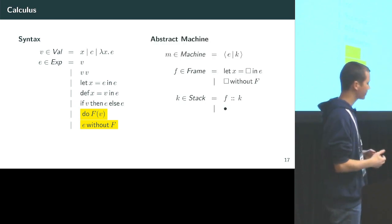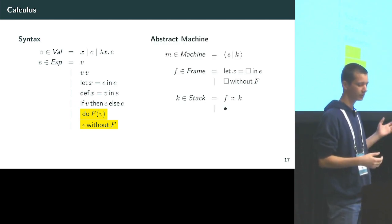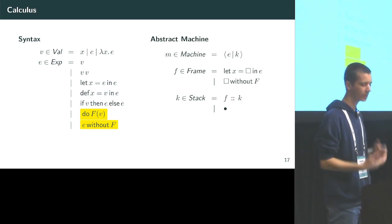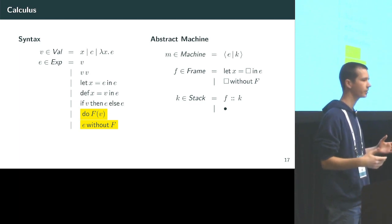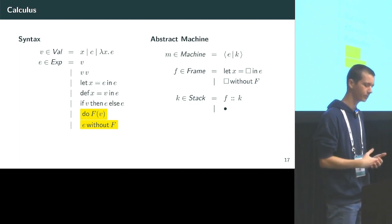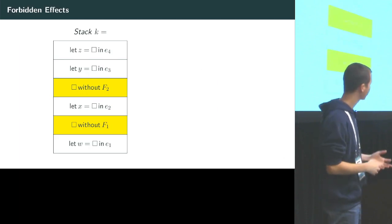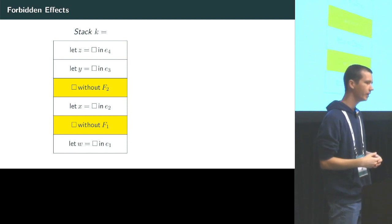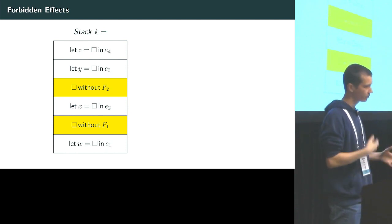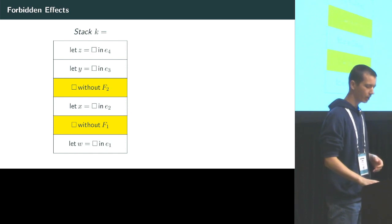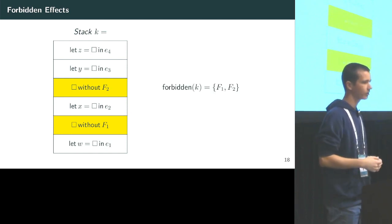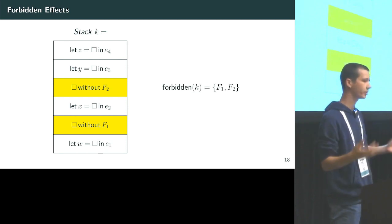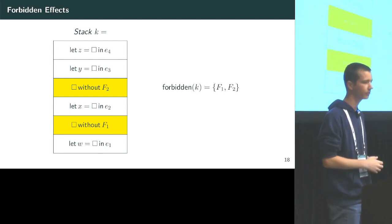The abstract machine has two components: the expression e being evaluated and a stack k. That stack is made of frames which are either let bindings or 'without' frames. From this stack we can determine the list of what's forbidden by the context by examining the without frames and collecting the effects forbidden there, giving us our forbidden effect set.